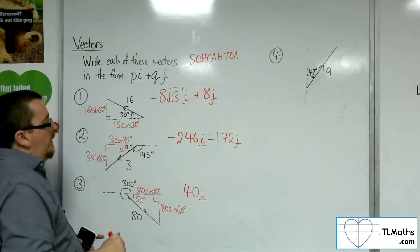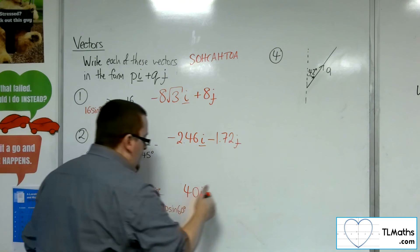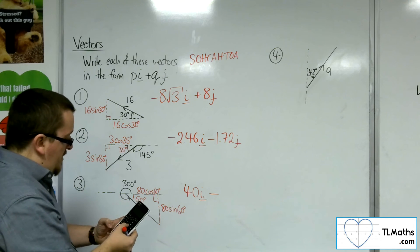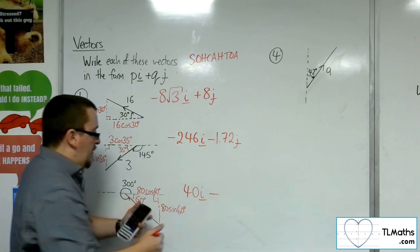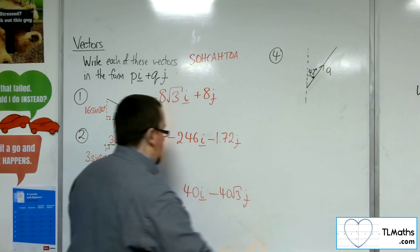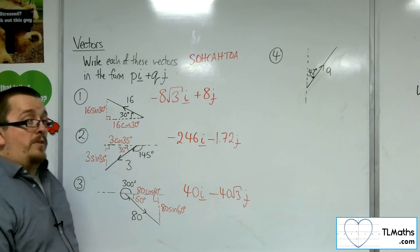And then take away, because we're going down, 80 times sine of 60, which is 40 root 3j. So that's number 3.